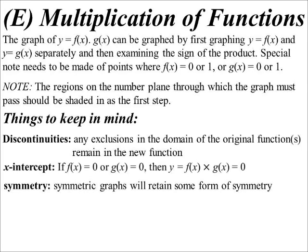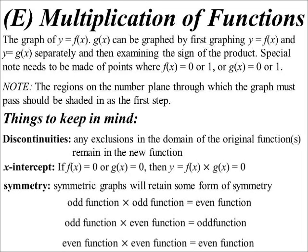Symmetry. Now, when we're multiplying, it'll retain some form of symmetry, because remember, we've seen this. Odd times odd isn't even, and so on and so on. So we know that if we're dealing with odd and even functions, there'll still be some sort of symmetry when we multiply them together.